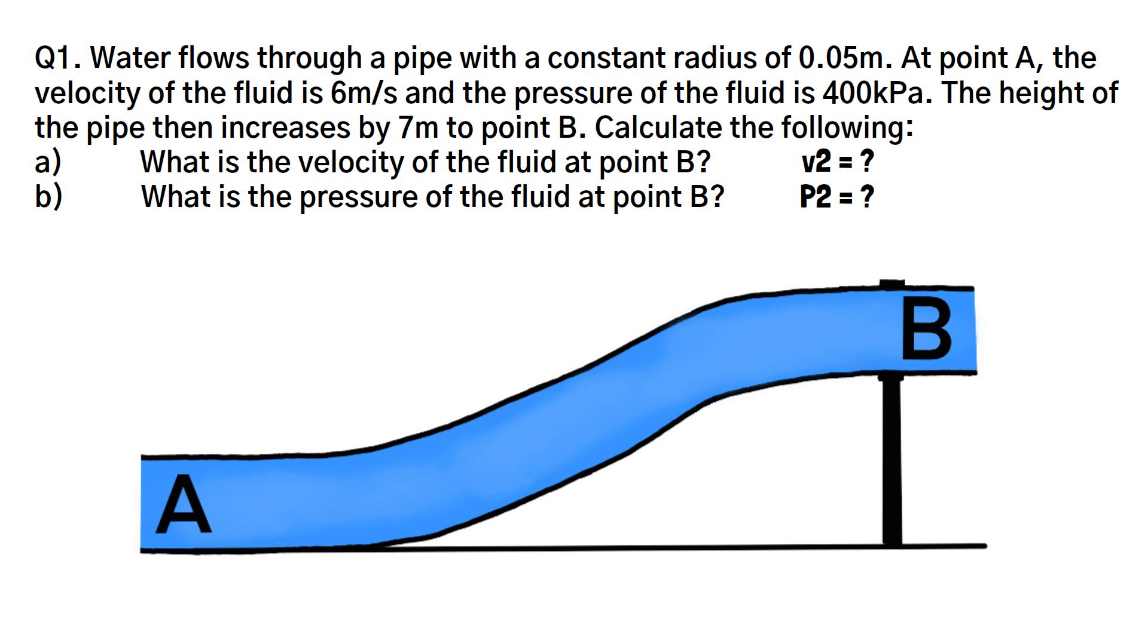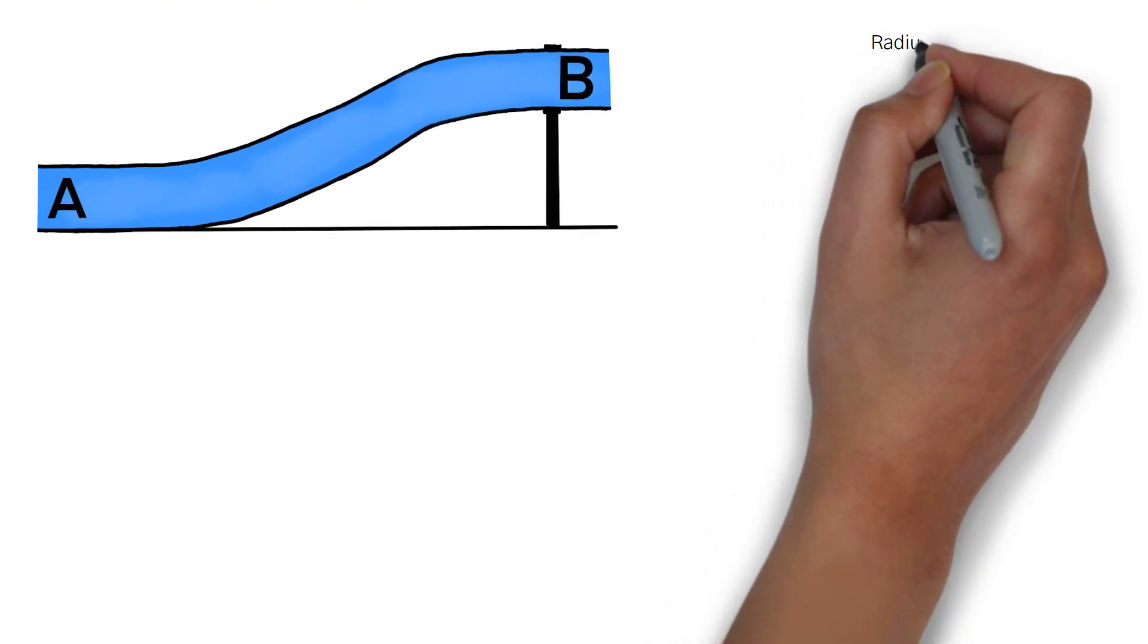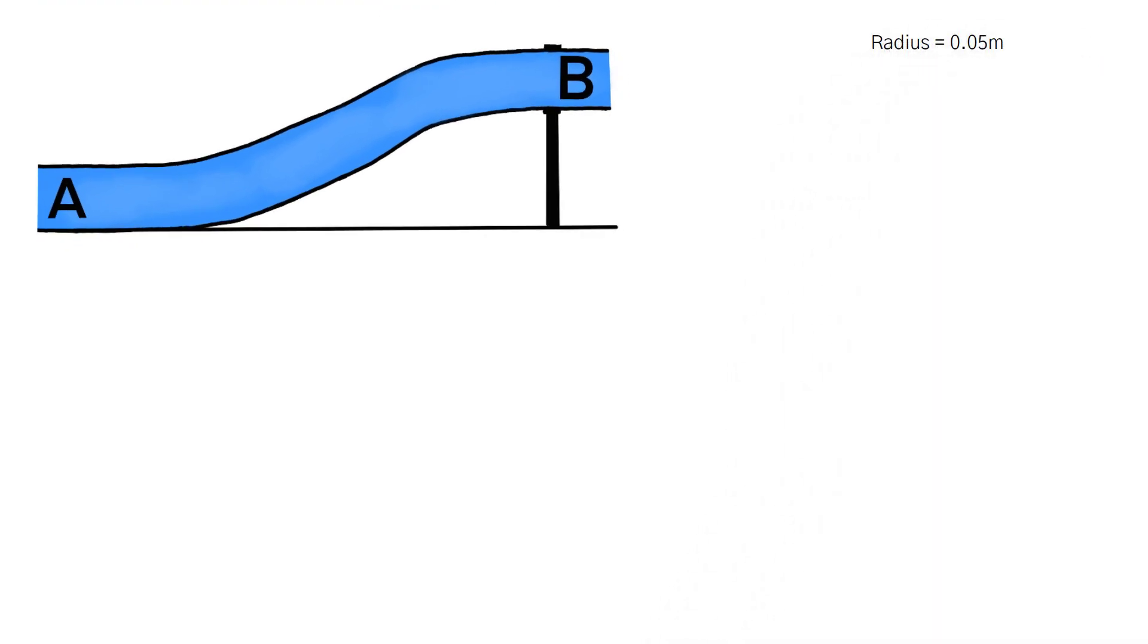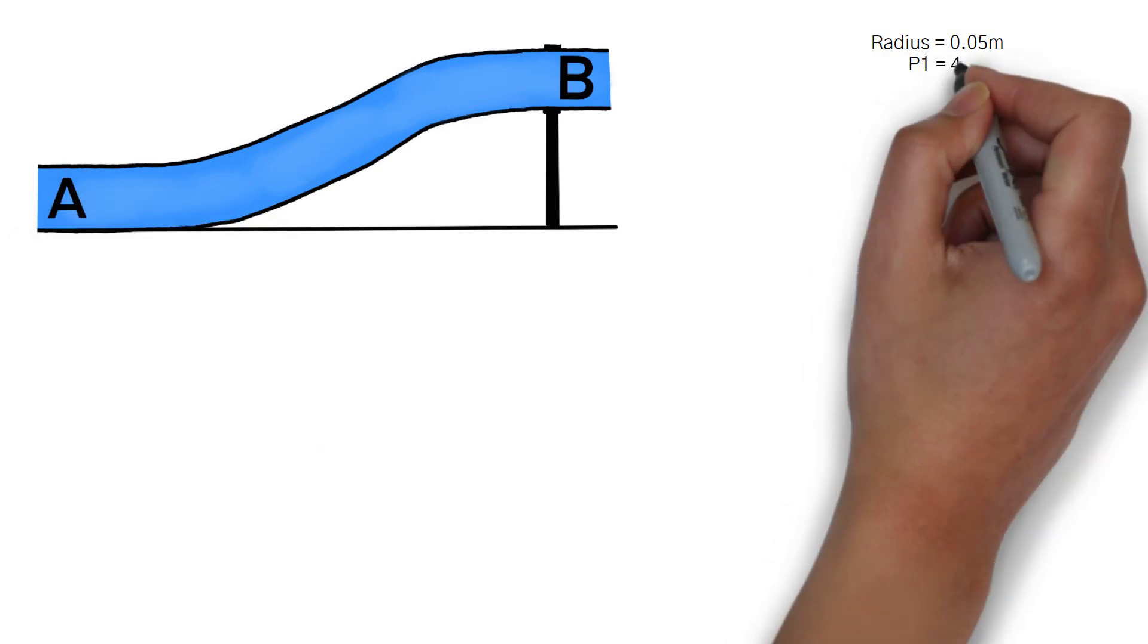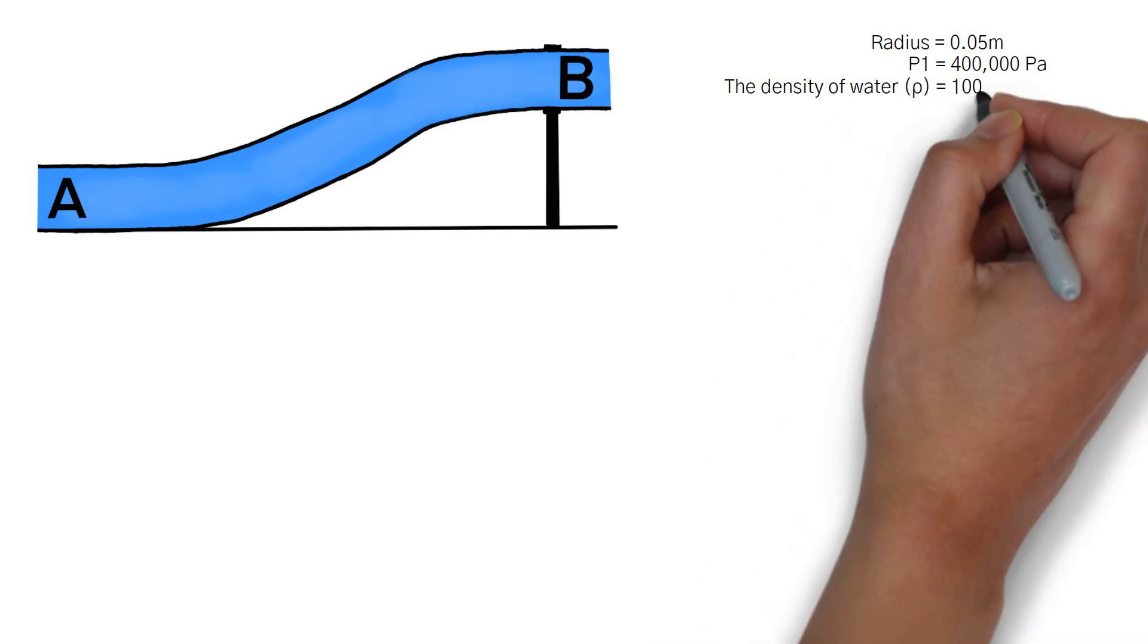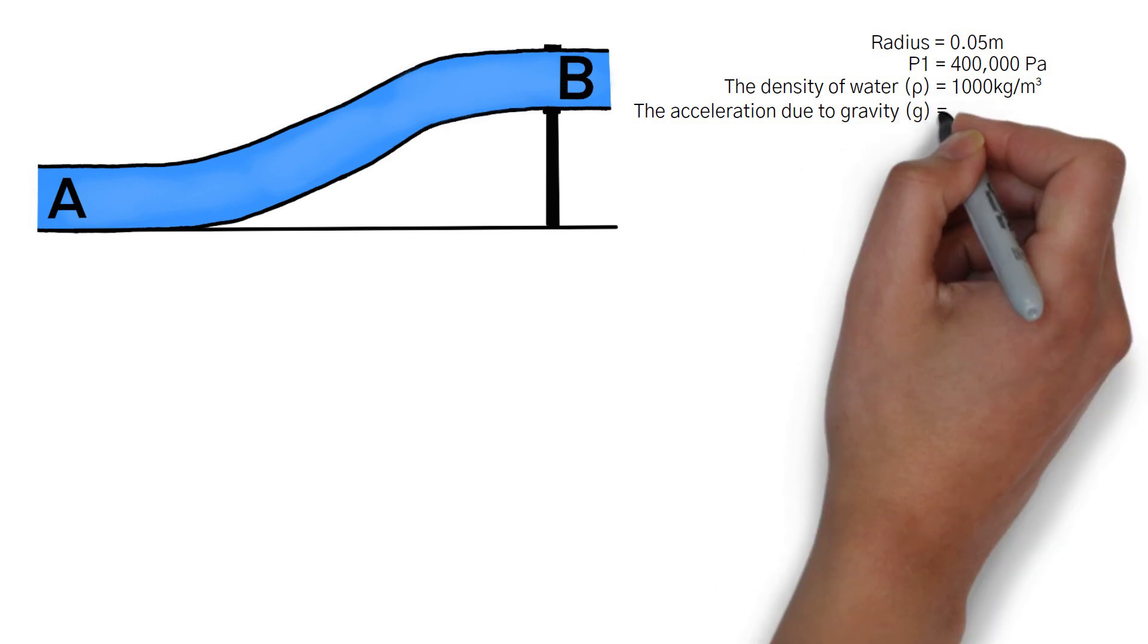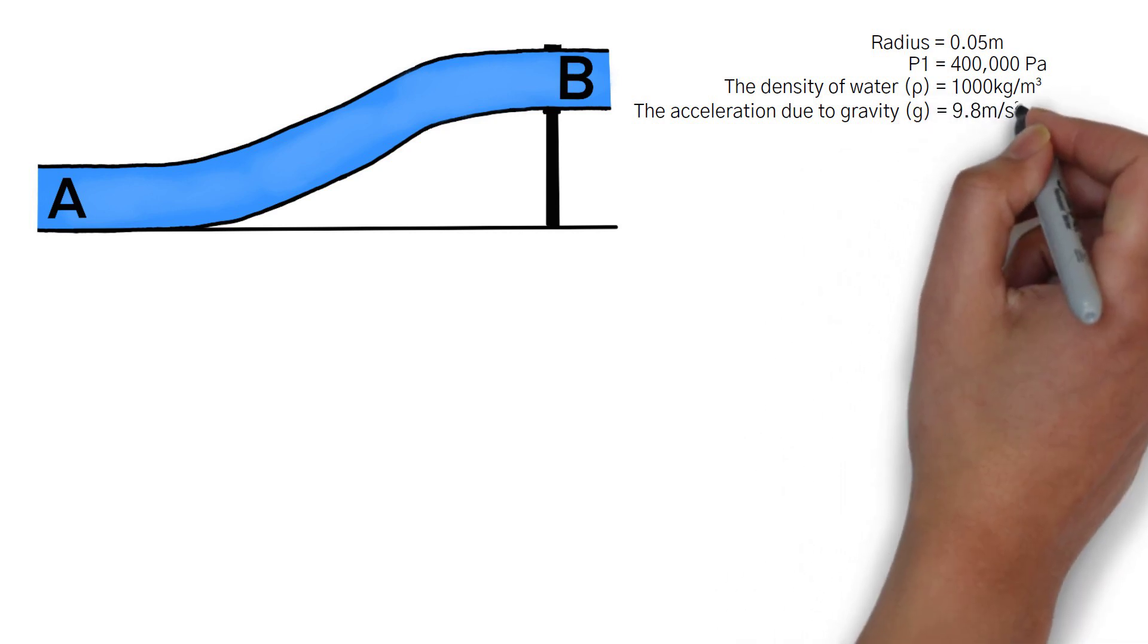We'll begin by writing down the information given to us in the problem to help us solve it. It tells us the radius of the pipe equals 0.05 meters. P1, the pressure at point A, equals 400,000 pascals. The density of water ρ equals 1000 kilograms per meters cubed. The acceleration due to gravity g equals 9.8 meters per second squared.